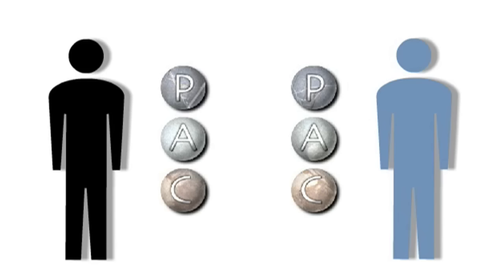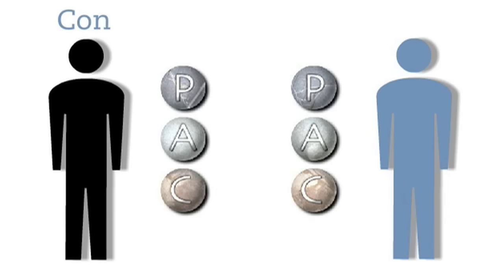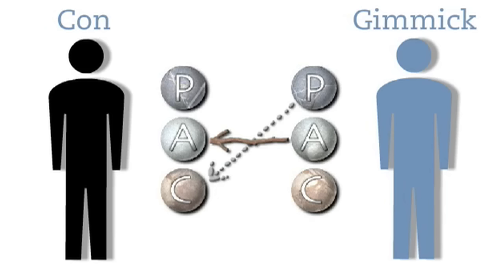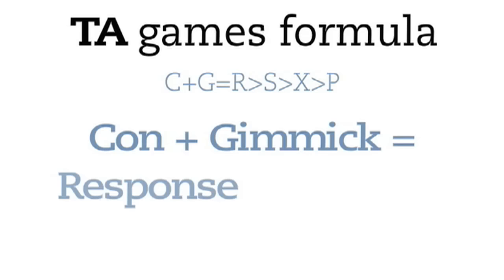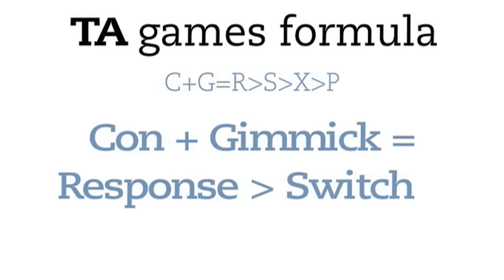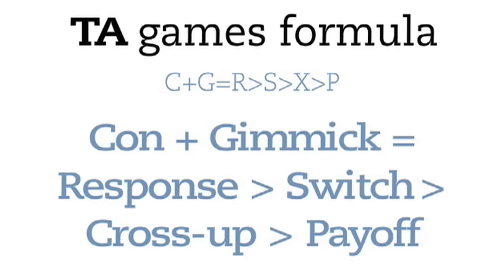TA suggests all parties in games are active participants, and sees the initiator's target not as a powerless victim but as a very engaged player. TA assigns names to the contributions of the respective players. Player A initiates a game with a con — an invitation in the form of a split transaction. For a game to proceed effectively, player B must accept the con on both levels. By doing this, B reveals their gimmick — some kind of need that B has which A can exploit. It could be a need for approval, to seem wise, superior, or even inferior. The TA Games formula is: a con plus a gimmick, leading to a series of exchanges between the players, then finally to a switch, a cross-up, and the payoff.